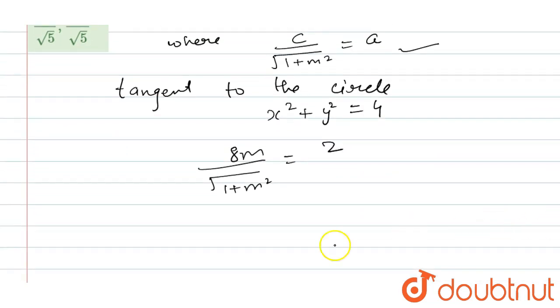Squaring both sides, 16m² divided by (1 + m²) = 4. Clearing this, 16m² = 4(1 + m²), which gives 16m² = 4 + 4m². So 16m² - 4m² = 4, giving 12m² = 4.